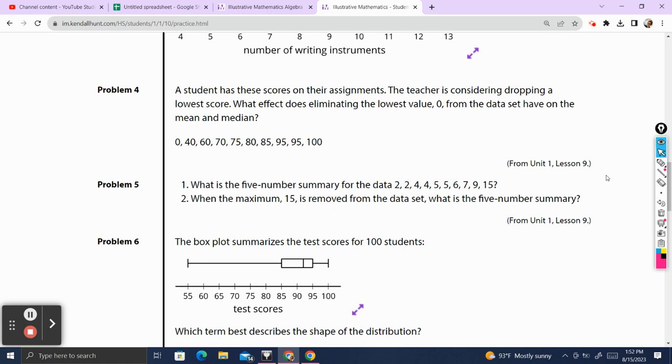Let's look at problem number four. A student has these scores on their assignments. The teacher is considering dropping the lowest score. What effects does eliminating the lowest value, zero, from the data have on the mean and the median? Well, let's think about it. Zero is way lower than all the rest of the scores. So when you add a zero, it's going to pull the mean to the left.